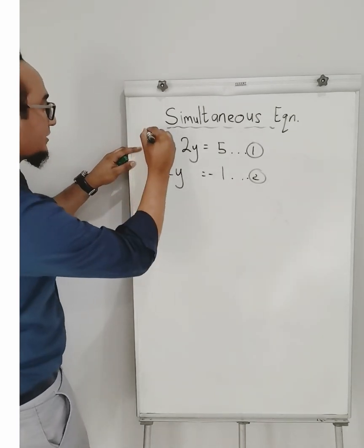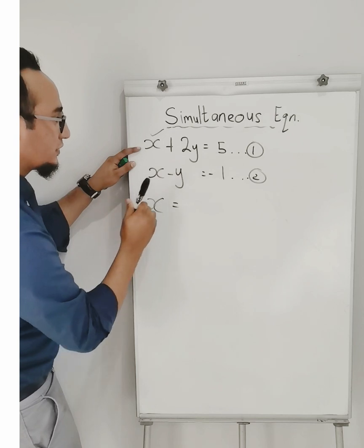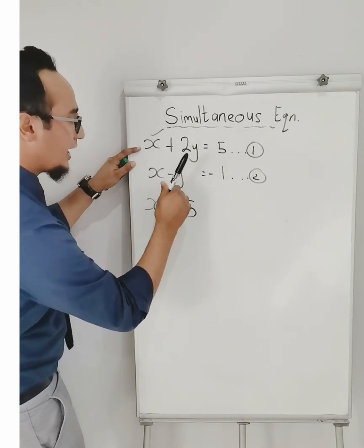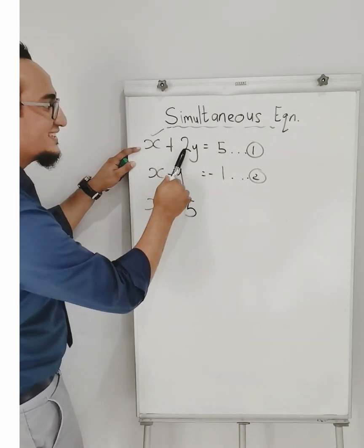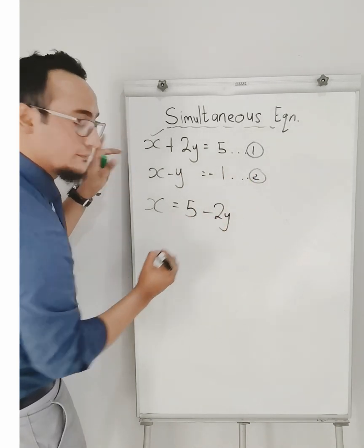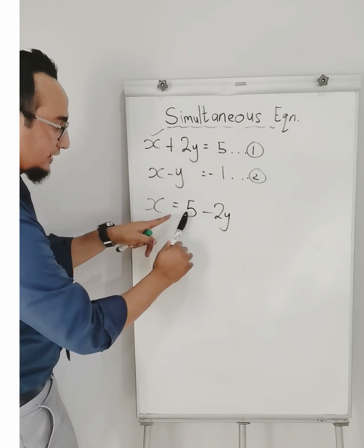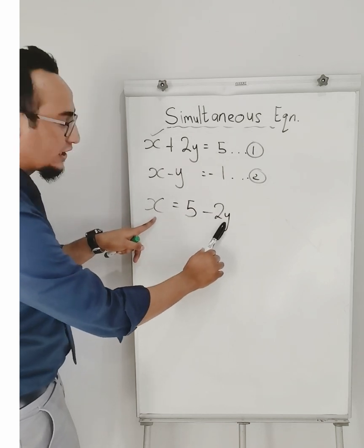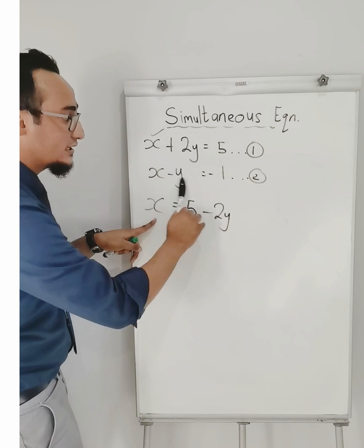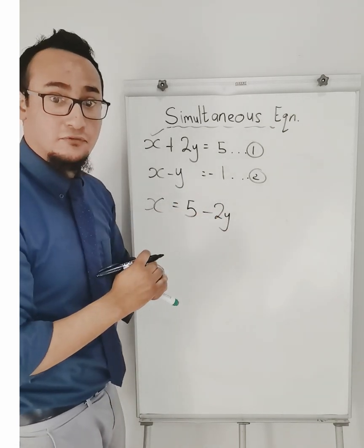Firstly, I'm going to solve for x over there. So x is equal to — what happens on the right-hand side is 5, and when I take this over it becomes negative 2y. So x is equal to 5 minus 2y. I'm going to substitute that into my second equation and I'm going to solve for the unknown value.